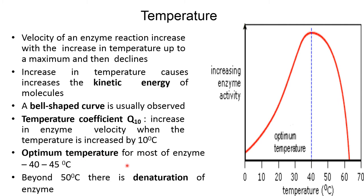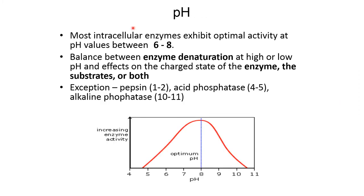Beyond 50 degrees centigrade there is denaturation of enzyme. Next is pH. Most intracellular enzymes exhibit optimal activity at pH value between 6 to 8. This represents a balance between enzyme denaturation at high or low pH and effect on the charged state of enzyme, the substrate, or both.